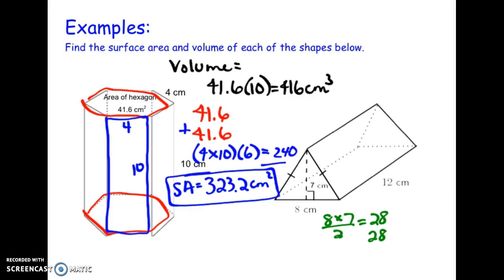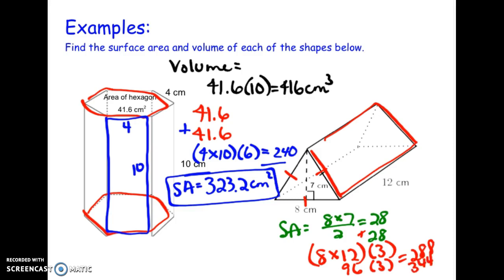Okay. And then this is surface area. For the rectangles here, because we have these tick marks here, this means this is an equilateral triangle and all these sides are the same. So each rectangle is eight by 12. And there are three of those. So each one is 96. Multiplying that by three, I get 288. And when I add 288, 28 and 28, I'm going to get 344 centimeters squared for my surface area.